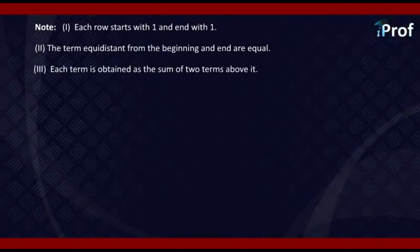For example, 3 is obtained by 1 plus 2, which are immediately above it on the left and right. Similarly, 6 is obtained by the sum of 3 and 3, which are above it. 10 is obtained by 4 plus 6, which are above it, and so on. This triangle can be extended to any number of rows.